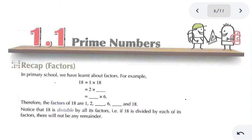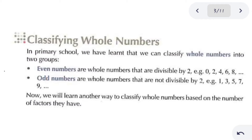Before starting prime numbers, we are recalling the different factors of a number. For example, the factors of 18: the first factor pair is 1 × 18, then 2 × 9, and 3 × 6. So 1, 2, 3, 6, 9, and 18 are all factors of 18.